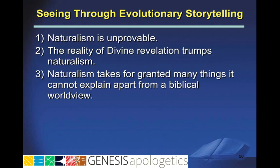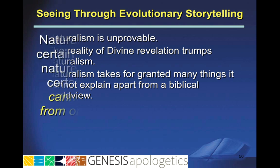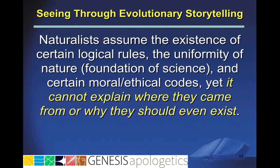Third, naturalism takes for granted many things it cannot explain apart from a biblical worldview. Naturalists assume the existence of certain logical rules, like the law of non-contradiction, the uniformity of nature — which is the foundation of science — and certain moral and ethical codes that it cannot explain where these came from or why they should even exist.